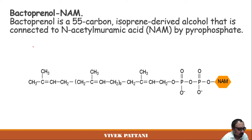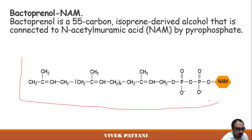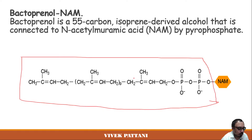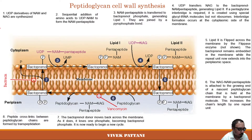An important carrier molecule is bactoprenol-NAM. Bactoprenol is a 55-carbon isoprene-derived alcohol that is connected to N-acetylmuramic acid by a pyrophosphate bond.